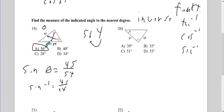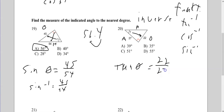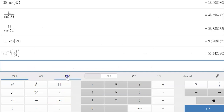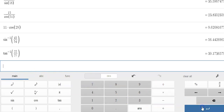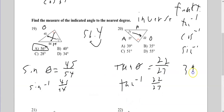Number 20 — we're trying to find the angle. We do not have the hypotenuse, so it's tangent. 22 is opposite, 27 is adjacent. Tangent of some angle equals opposite over adjacent — TOA. We type in tan⁻¹(22 ÷ 27). That gives 39.17, which rounds down to 39 degrees.